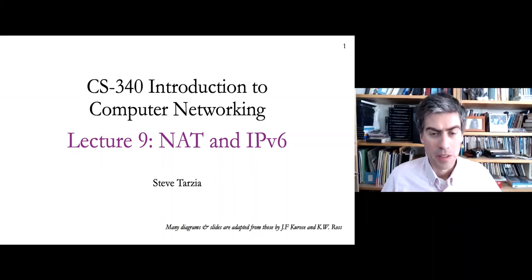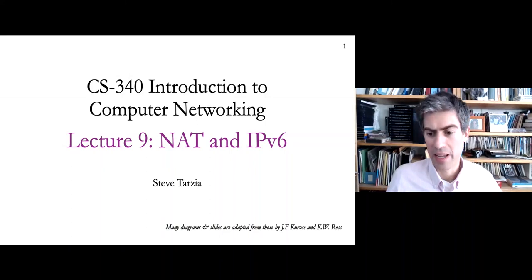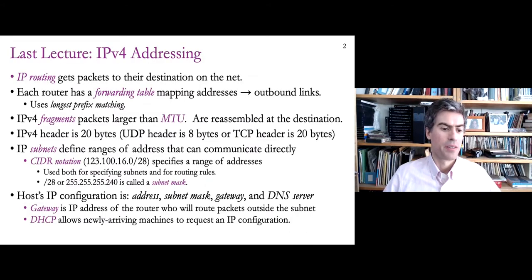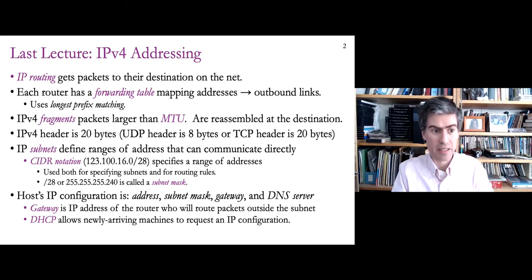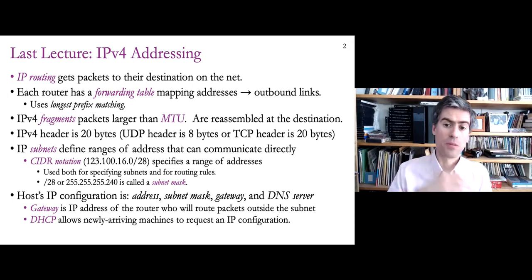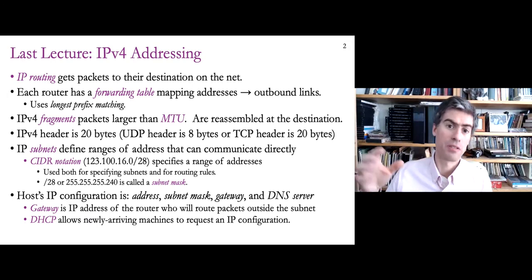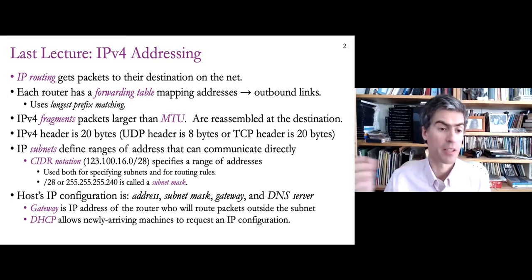Welcome to lecture number nine on NAT and IP version 6. Last time we talked about IP version 4, in particular a lot about the addressing and forwarding. IP is the protocol that routes packets from source to the destination across a network that's very large and complex — the internet.